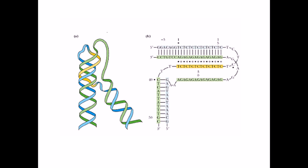H-DNA is nothing but a triple helix DNA, or DNA with a triple helix structure. It is a slight modification of the triple helix DNA, formed due to intra-strand hydrogen interactions.